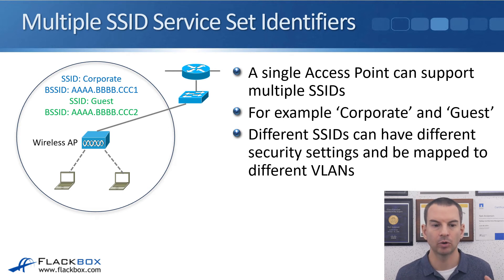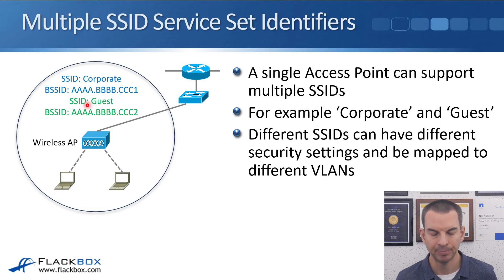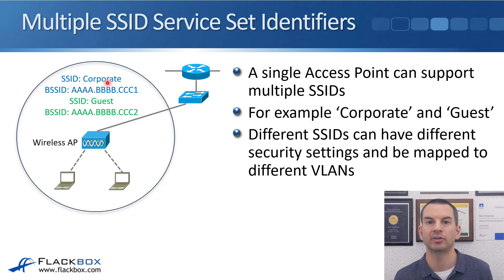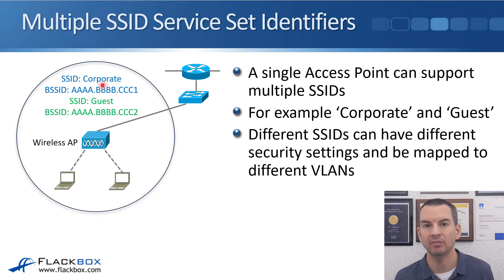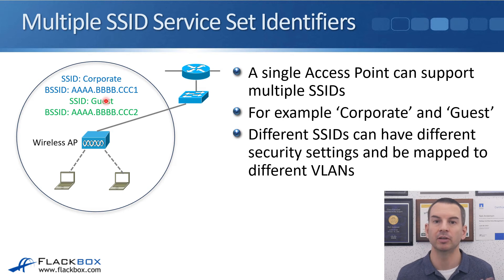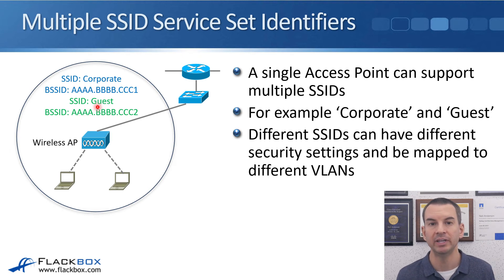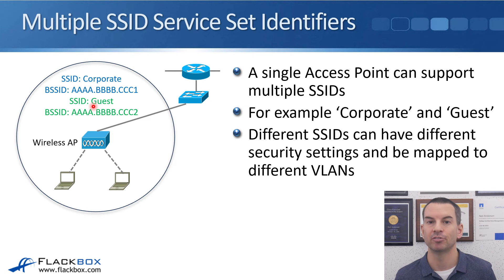In our corporate office, we've created a corporate SSID and a guest SSID. For users to connect to the corporate WLAN, they need to supply a valid username and password. When they do, they're mapped to the corporate VLAN and IP subnet and get connectivity to all internal corporate resources like servers. If a guest walks into the company and wants wireless access, they connect to the guest SSID, which only requires a password. When they connect to the guest SSID, they're mapped to the guest VLAN and IP subnet, which has no access to internal resources — just internet access.